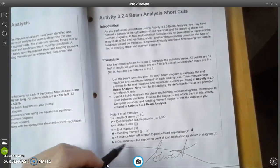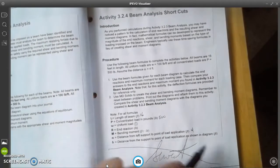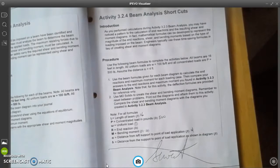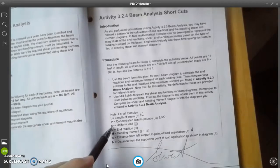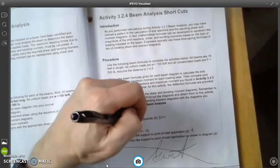Okay, and b is the distance from the support to end of load application shown in the diagram, and that depends on what the number is for the diagrams. I believe the uniform is 100 pounds here.